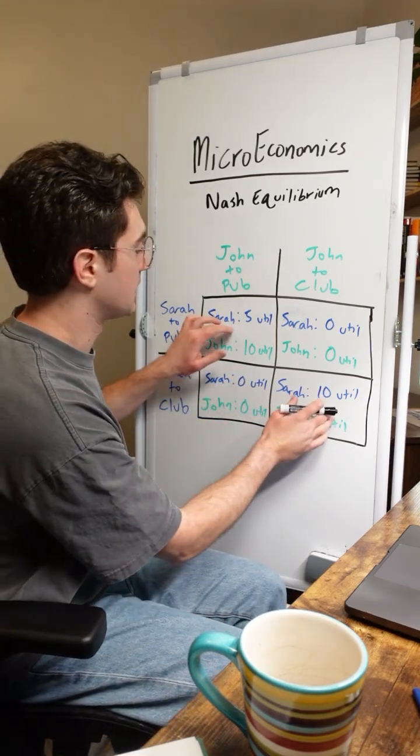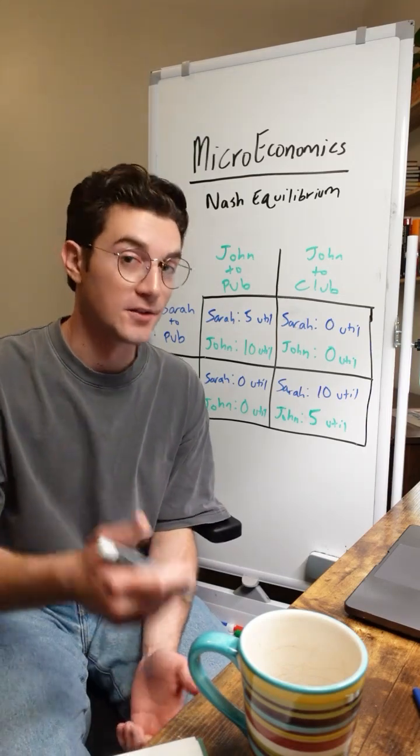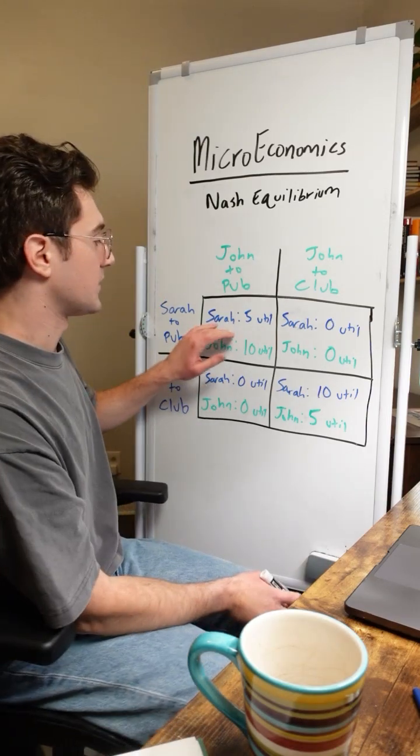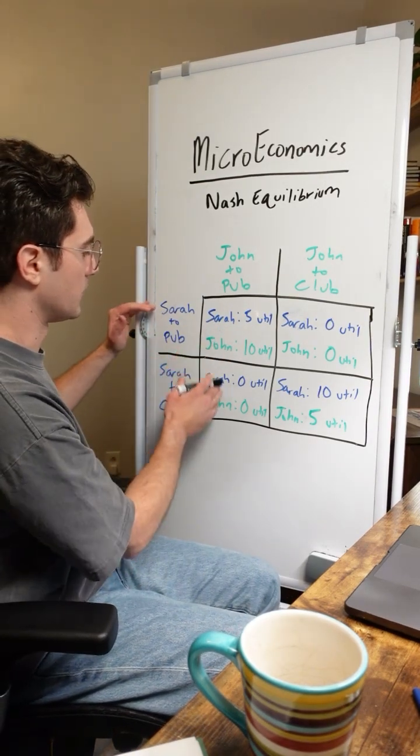With that being said, once the game rests in either of these cells, neither party is incentivized to switch their strategy, and in turn it's a Nash equilibrium. So let's start with the top left and view this from Sarah's point of view - only focus on the blue value here.